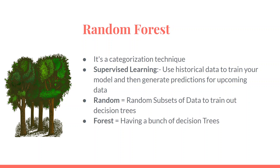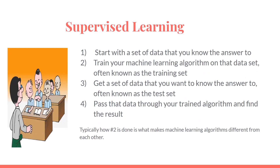It's called Random Forest because it uses a random subset of data to train its decision trees — that's where the keyword 'random' comes from — and 'forest' because it has a bunch of decision trees to generate predictions. Supervised learning is the most common category of machine learning algorithms. We start with a set of data that we already know the answer to, then split it into two sets.